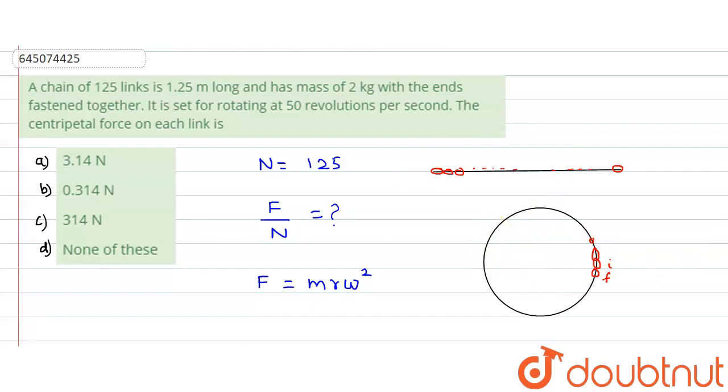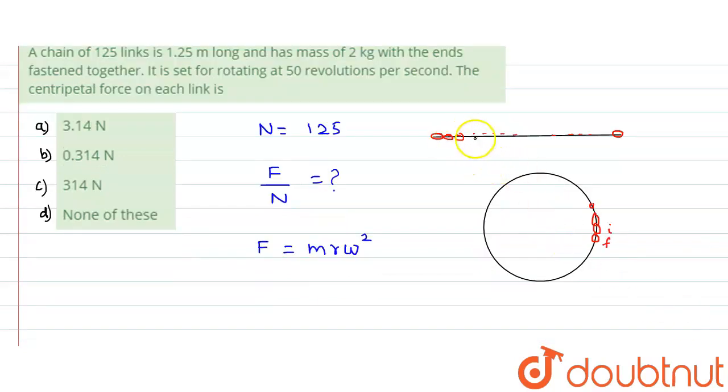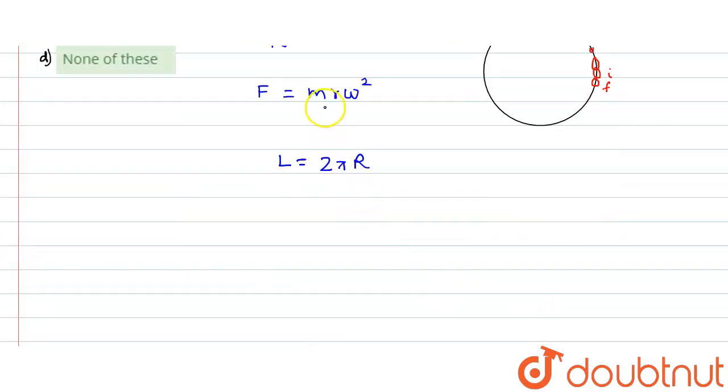Now clearly we can see that the length of the chain would now become the circumference of the circle. So we can say that L, the length of the chain, would be equal to 2πr, the circumference of the ring of radius r.